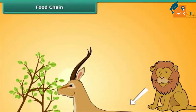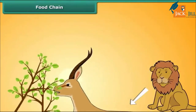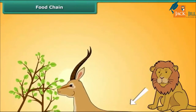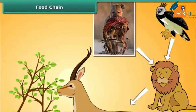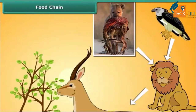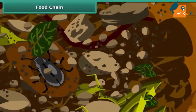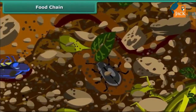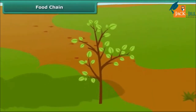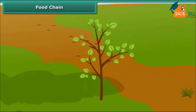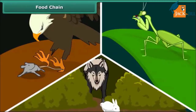When the lions die, their physical remains are eaten by scavengers such as vultures, hyenas, etc. Decomposers such as fungi and bacteria feed on the remnants of dead organisms and break them down into humus, which provides nutrients to plants. Thus the food chain comes one full cycle.